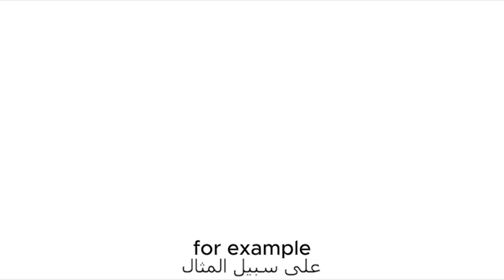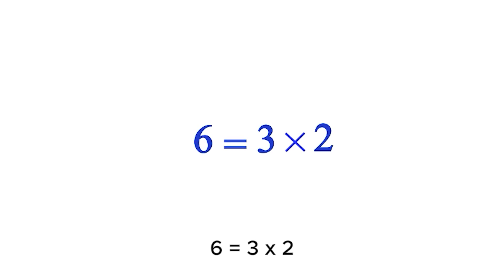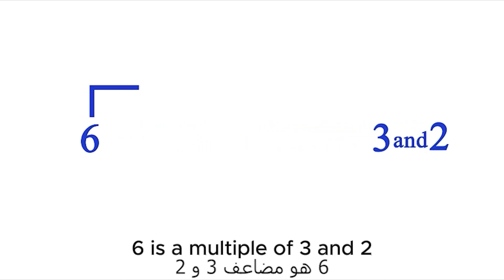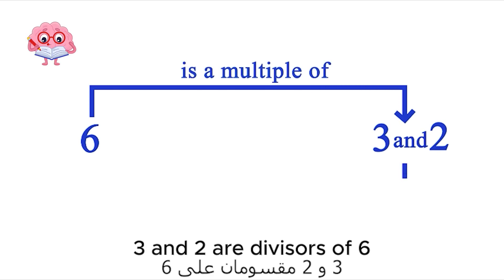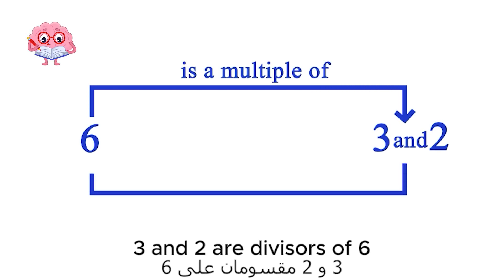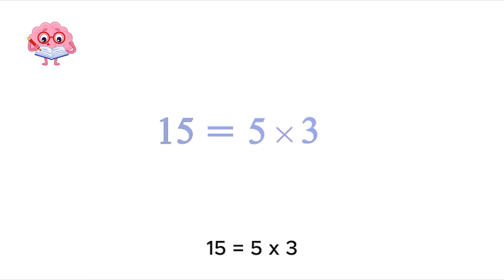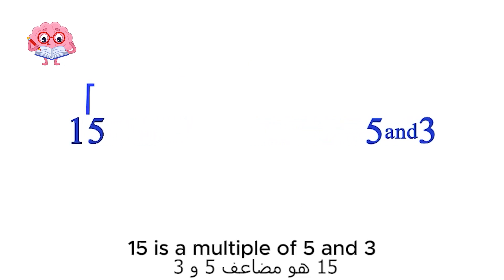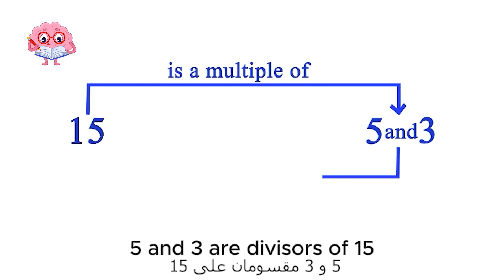For example, 6 equals 3 times 2. So 6 is a multiple of 3 and 2, and 3 and 2 are divisors of 6. Similarly, 15 equals 5 times 3. So 15 is a multiple of 5 and 3, and 5 and 3 are divisors of 15.